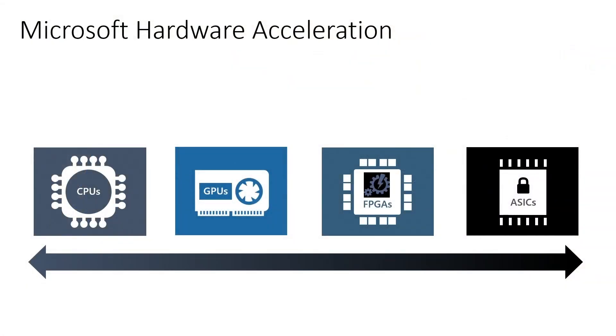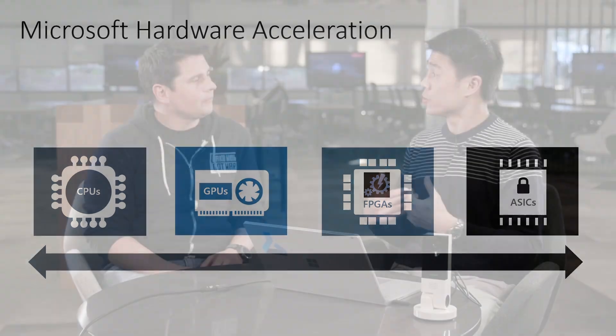It's also super important to be able to accelerate these algorithms in the cloud as well. From a Microsoft perspective, we look at the spectrum of hardware available. It's not an either-or decision — it's really about what your needs are and what hardware options best meet those needs. If you look at the scale of efficiency versus flexibility: on the flexibility side, you have CPUs. Super flexible, they run everything, but they're sequential and might not run as fast as you'd like.